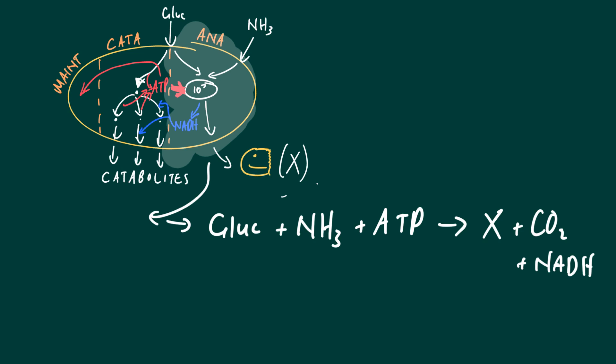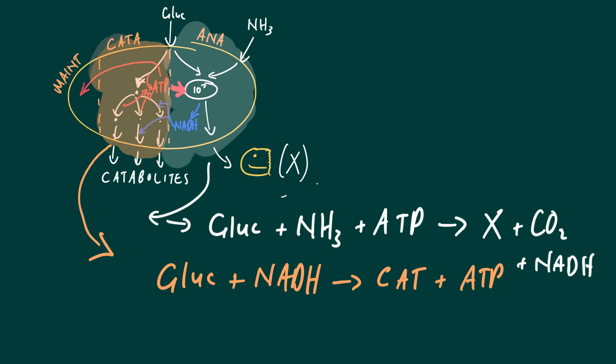Now I'm interested in describing the overall reaction of the catabolism. This reaction will be the catabolism. We require glucose - no ammonia required. The glucose will add up with NADH that needs to be consumed from the anabolism, and that will go to catabolites plus, most importantly, the ATP that gets generated. Overall, the glucose will consume some NADH but will also produce the ATP or energy required to fuel the cell.